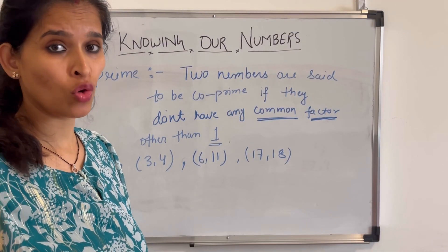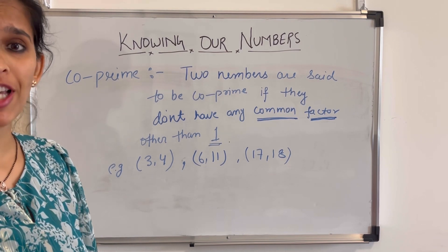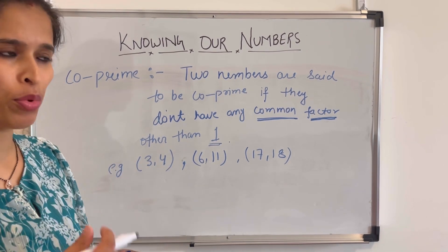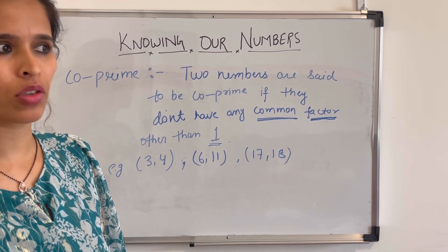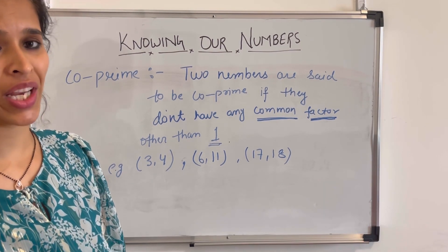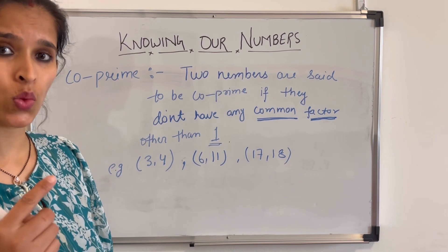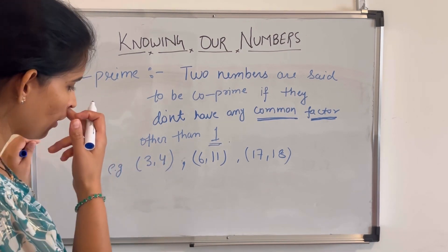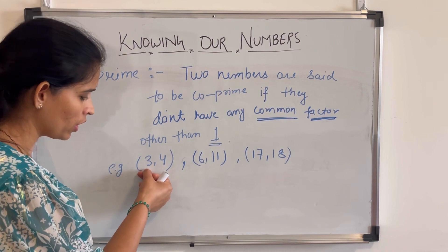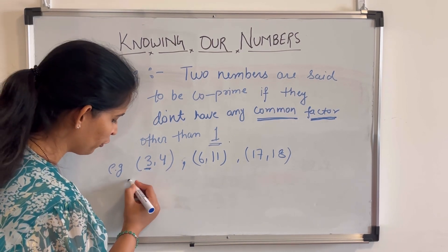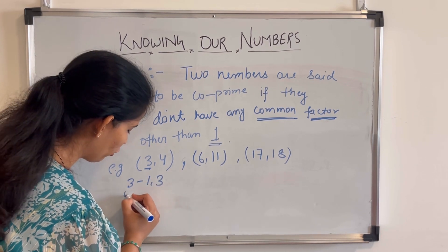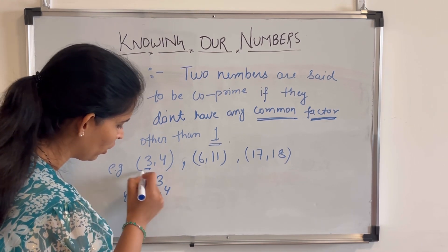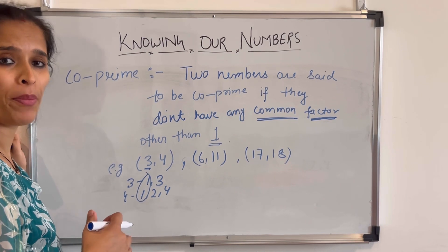Co-prime numbers are those two numbers which have only 1 as their common factor. Co-prime always refers to a pair of numbers. We check their factors: if the only common factor is 1, they are co-prime. For example, 3 has factors 1 and 3; 4 has factors 1, 2, and 4. The only common factor is 1, so 3 and 4 are co-prime numbers.